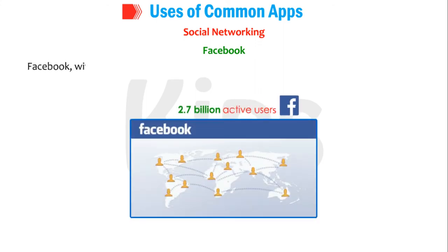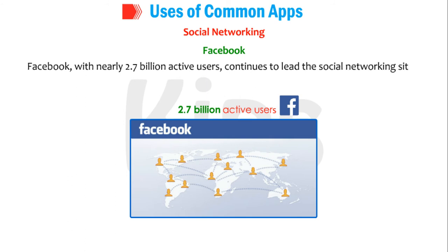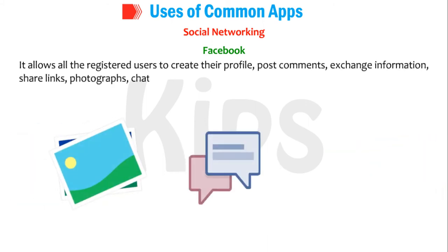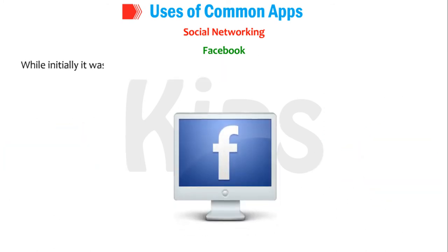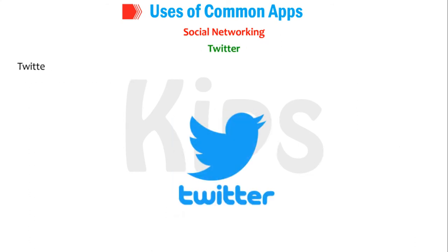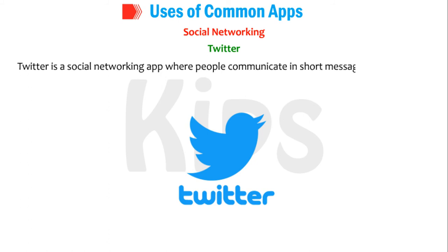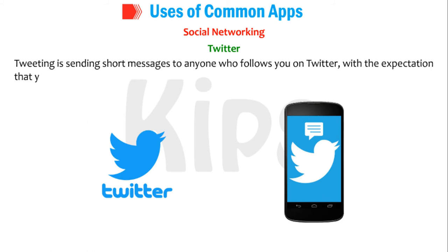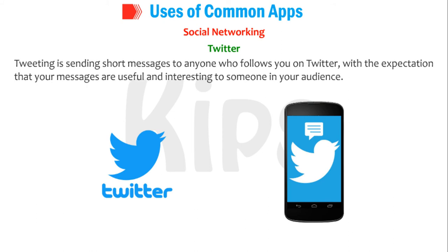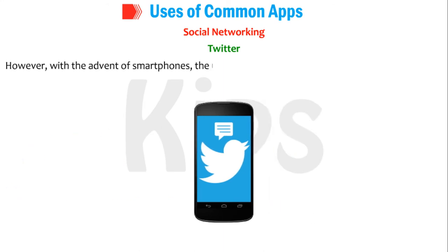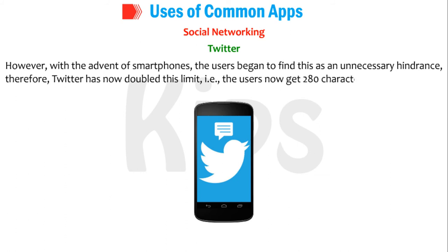Facebook, with nearly 2.7 billion active users, continues to lead the social networking sites. It allows all registered users to create their profile, post comments, exchange information, share links, photographs, chat, and play games. While initially it was PC-based, Facebook is now available as a pre-installed app on most mobile phones and tablets. Twitter is a social networking app where people communicate in short messages called tweets. Messages sent with this app were initially restricted to 140 characters; however, Twitter has now doubled this limit so users get 280 characters per tweet.